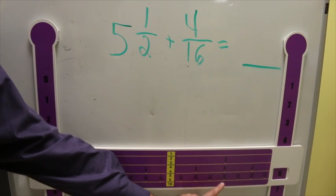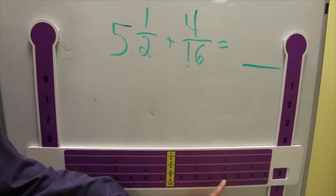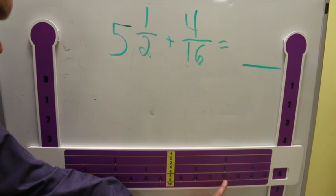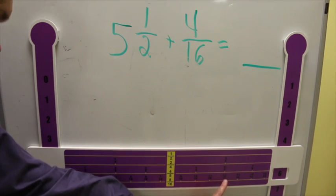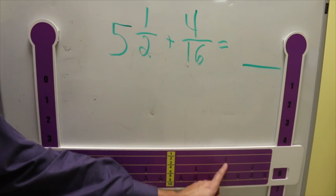1, 2, 3, 4. Many of our students would say our final answer is 5 and 12 sixteenths. But as you can see, this number can be simplified to 5 and 3 fourths.